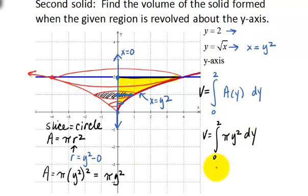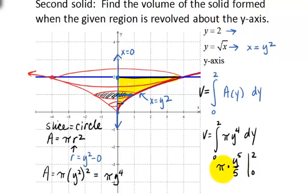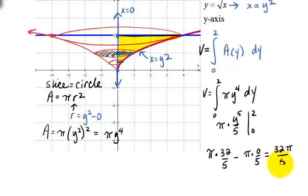Factoring pi out, we have pi times the integral of y to the fourth — and notice the correction: the integrand should be y to the fourth, not y squared. Integrating gives pi times y to the fifth over 5, evaluated from 0 to 2. Relating this back to the last example, the only difference is the pi, because here pi r squared gives us circles whereas before we just had S squared for squares. The result is pi times 32 fifths minus pi times 0, which gives us a volume of 32 pi over 5.